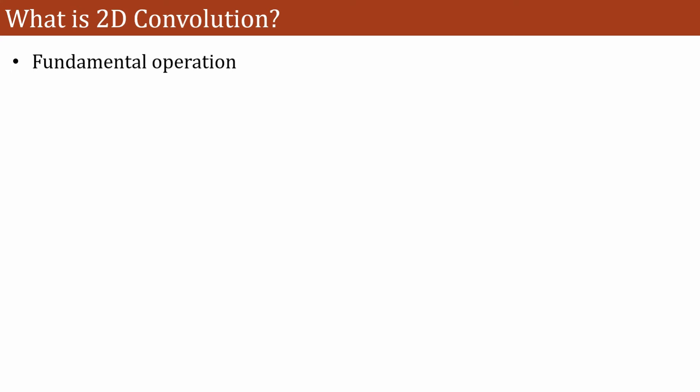Now what is 2D convolution? It is a fundamental operation in digital image processing. To change the image we need to change the pixel values in this image. By changing this pixel value, we have to apply some mathematical operation.